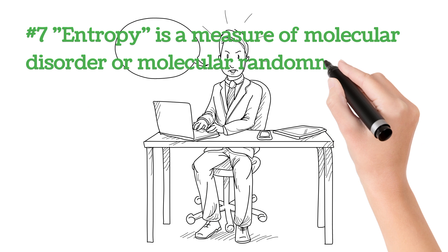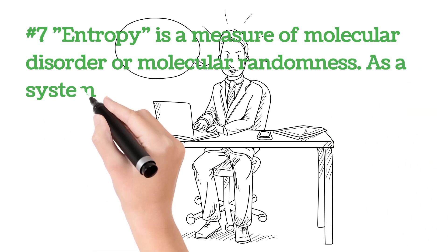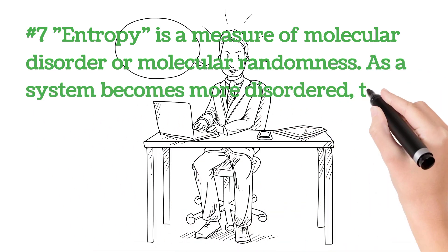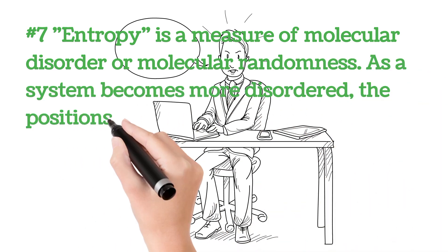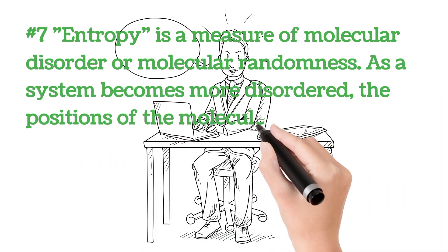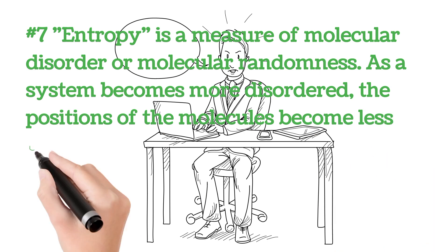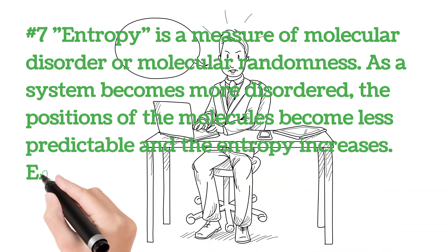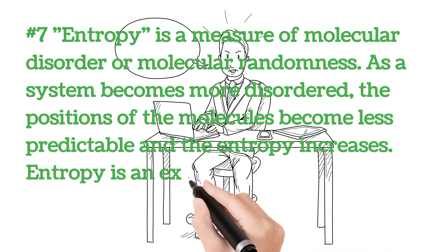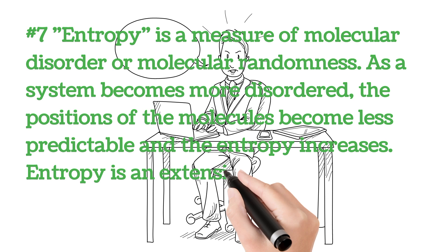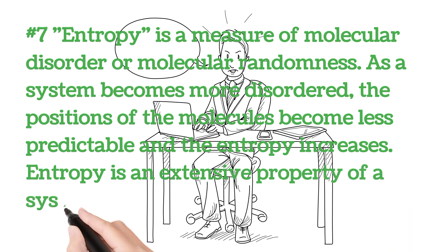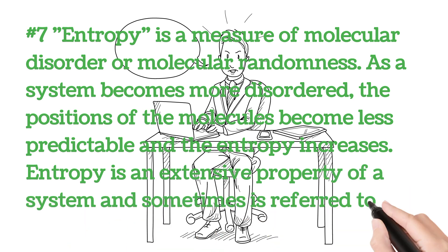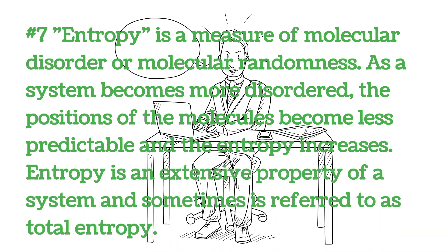As a system becomes more disordered, the positions of the molecules become less predictable and the entropy increases. Entropy is an extensive property of a system and is sometimes referred to as total entropy.